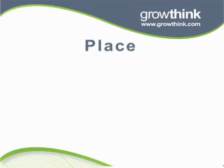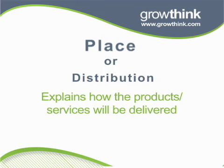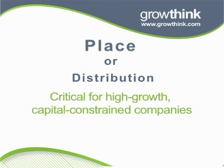The final P refers to place or distribution, and explains how a company's products and services will be delivered to customers. This section is crucial because if customers cannot access products and services, they cannot purchase them. This section is especially critical for high-growth, capital-constrained companies, as attaining profit-effective distribution channels is often the most vexing challenge for these businesses.